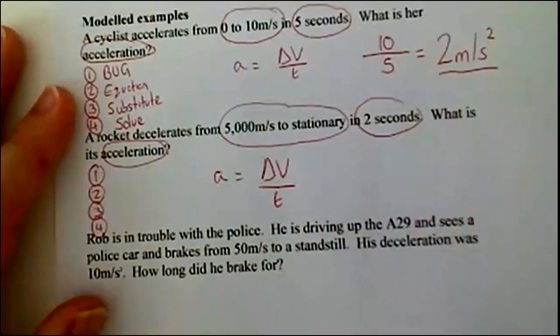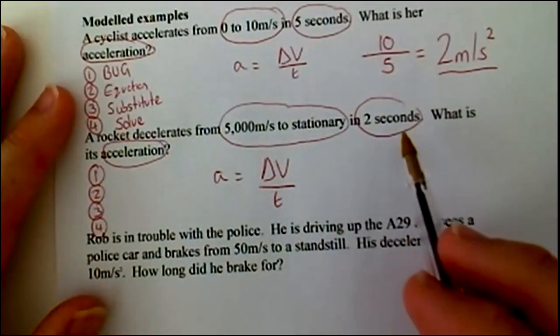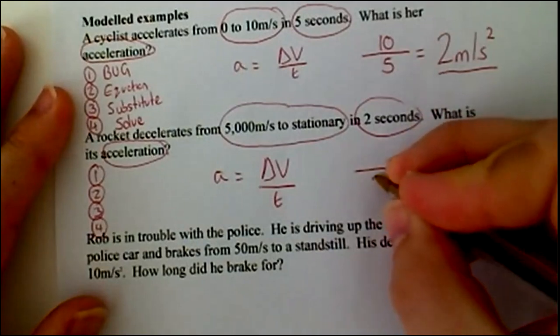So, we see here, first of all, step one is bug, step two, the equation. Again, you should be doing this from memory. So, time, straight away, easy, two seconds. We know that t is two.